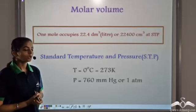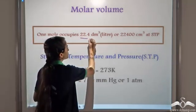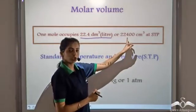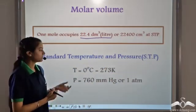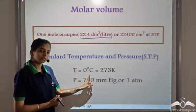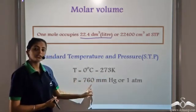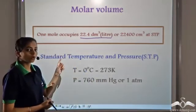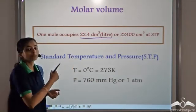Let's recall: 1 mole occupies 22.4 decimetre cube, or 22.4 litres, which is also equal to 22400 centimetres cube at STP. STP conditions — standard temperature and pressure — are defined by a temperature of 0 degree Celsius, which is equal to 273 Kelvin, and a standard pressure of 760 millimetres of mercury, which is equal to 1 atmosphere pressure. This volume occupied by 1 mole of a gas at STP is known as the molar volume.